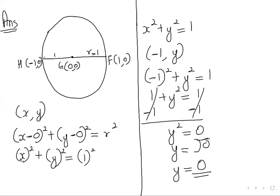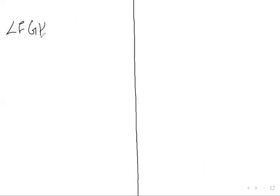Notice that all three points — F at (1, 0), G at (0, 0), and H at (-1, 0) — have Y-value zero. They all lie on the X-axis, forming a straight line. Since F, G, and H are collinear, angle FGH is a straight angle, equal to 180°.